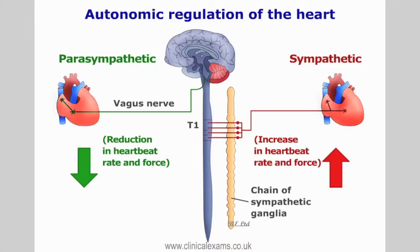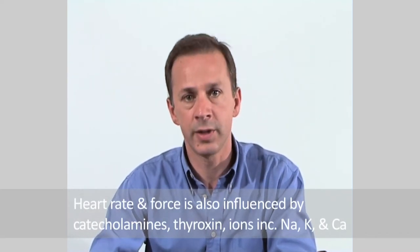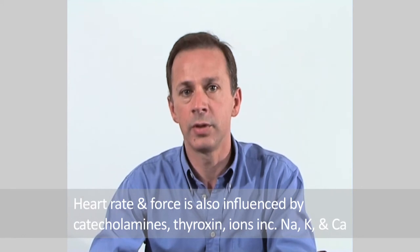In terms of extrinsic control mechanism, the heart rhythm and force is influenced by parasympathetic supply from the vagus nerve and by sympathetic fibres. The vagus nerve has a cardio-inhibitory effect on the pulse, whilst the sympathetic nervous system has a cardio-acceleratory effect. Heart rate and force is also influenced by circulating catecholamines, thyroxine, and by the concentration of ions including sodium, potassium and calcium.